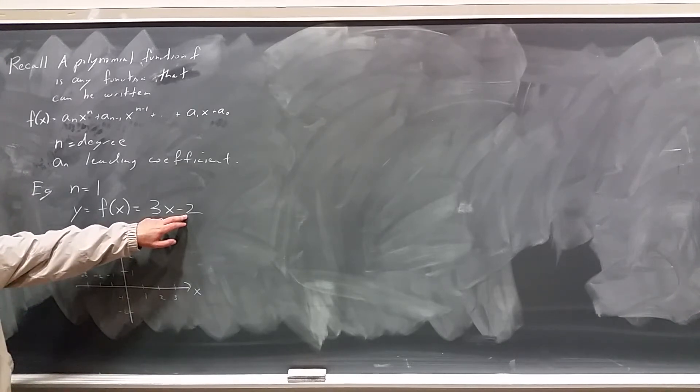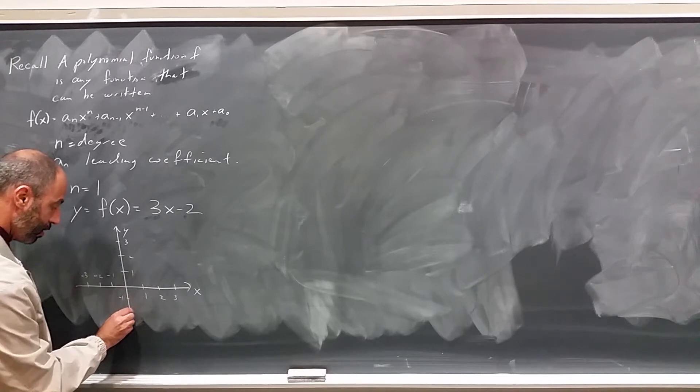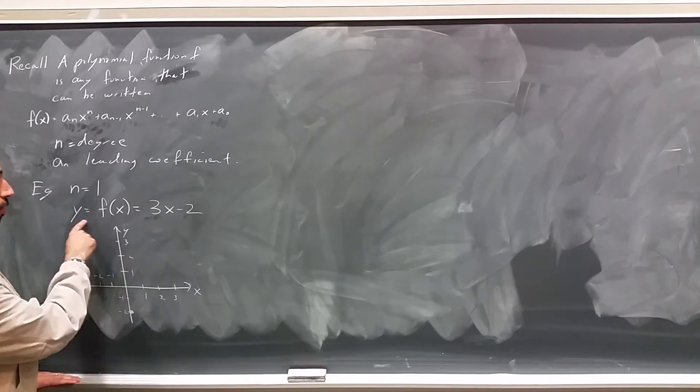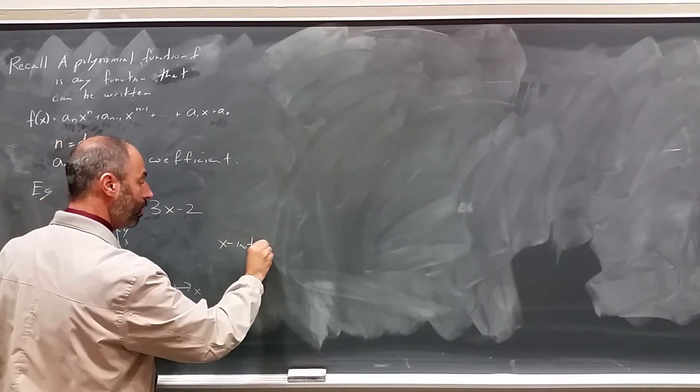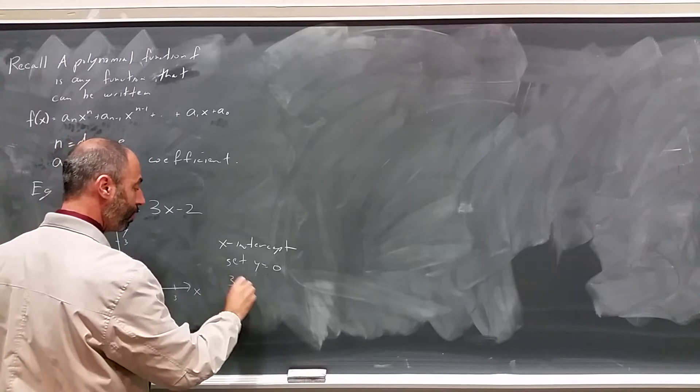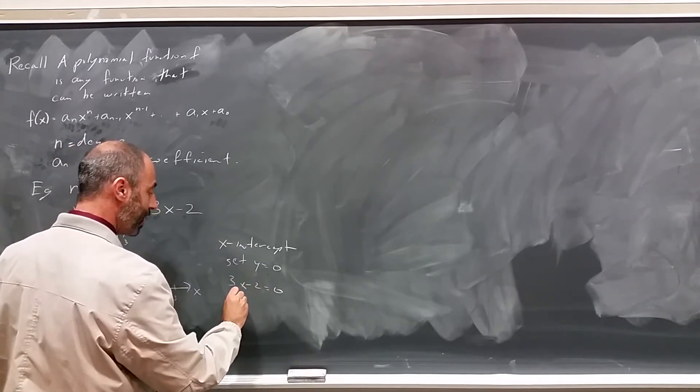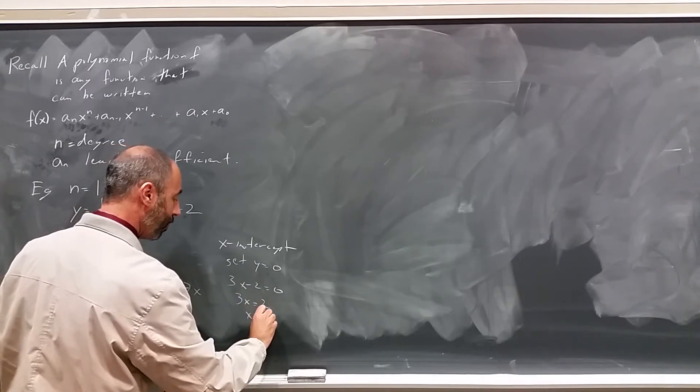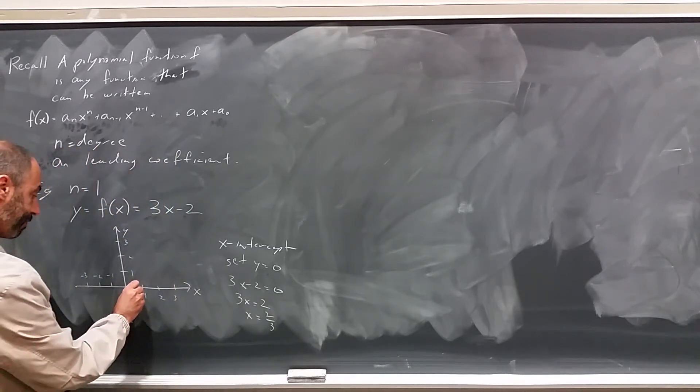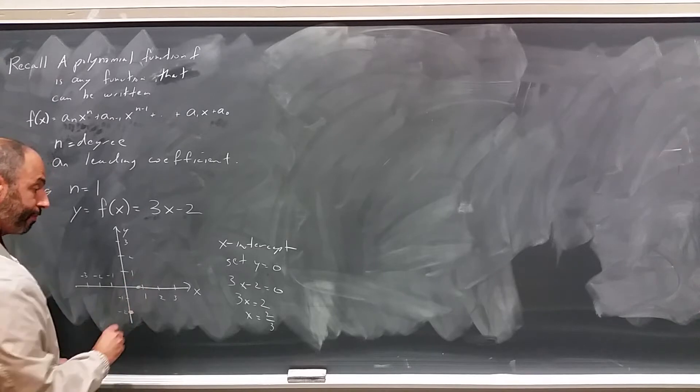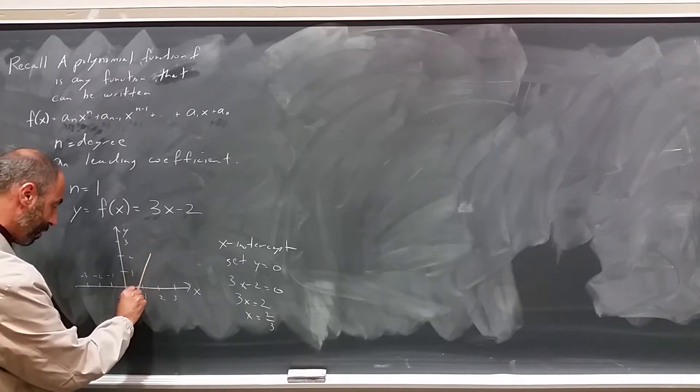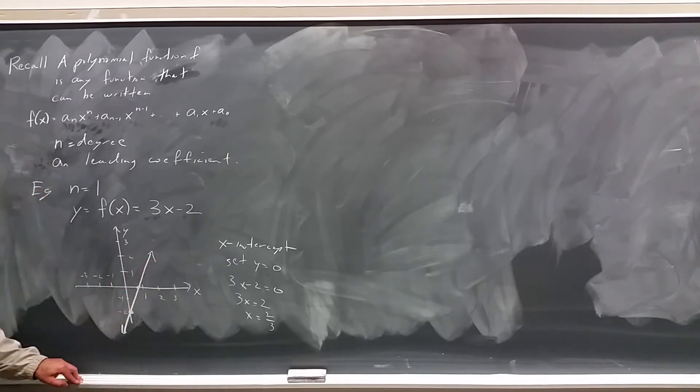We can see right away that the y-intercept is minus 2. To find the x-intercept, we set y equals 0. So 3x minus 2 equals 0, we end up with 3x equals 2, or x equals 2/3, which is right about there. And so we have a line going uphill to the right through these two points. Pretty much what we expected.